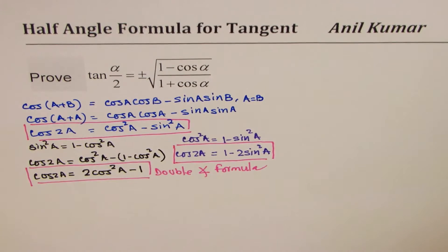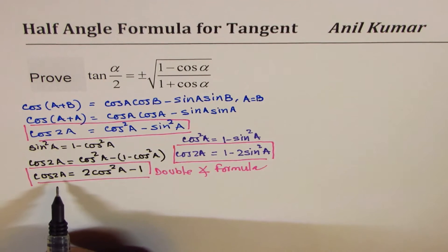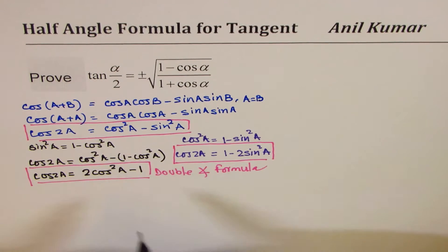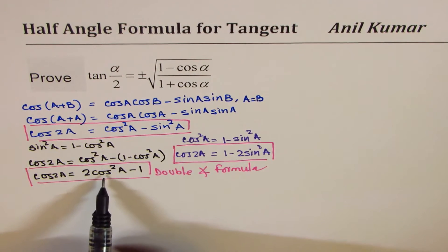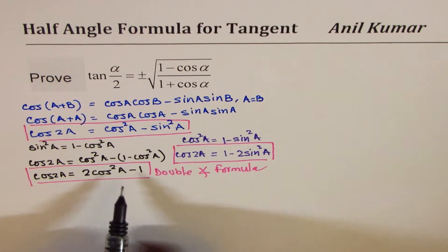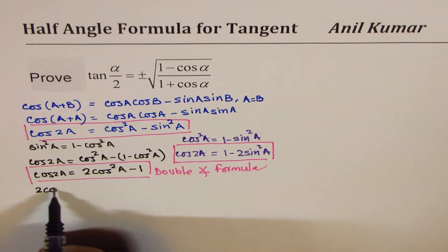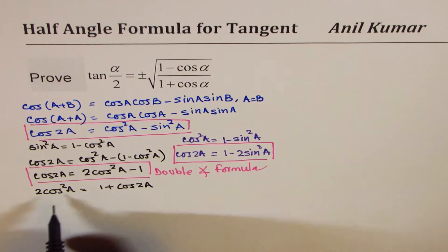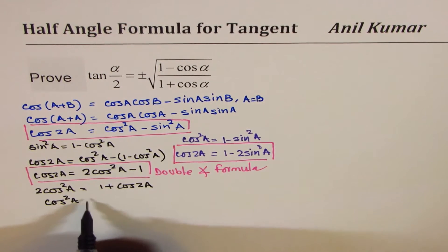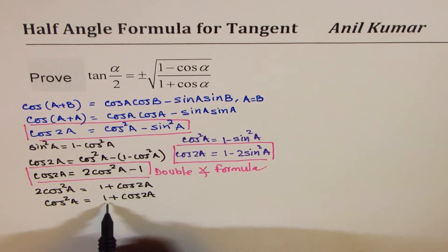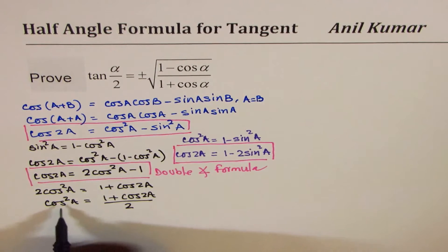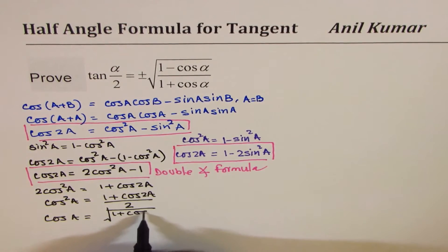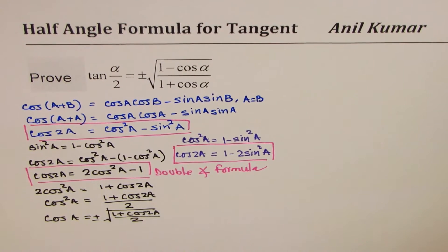Now, we could rearrange first and then do the substitution. Let's rearrange and write what cos squared a is. We get 2 cos squared a equals 1 plus cos 2a, or cos squared a equals (1 plus cos 2a) divided by 2. If we take the square root, we get cos a equals plus or minus square root of (1 plus cos 2a) divided by 2. So basically, we have written a in terms of 2a.